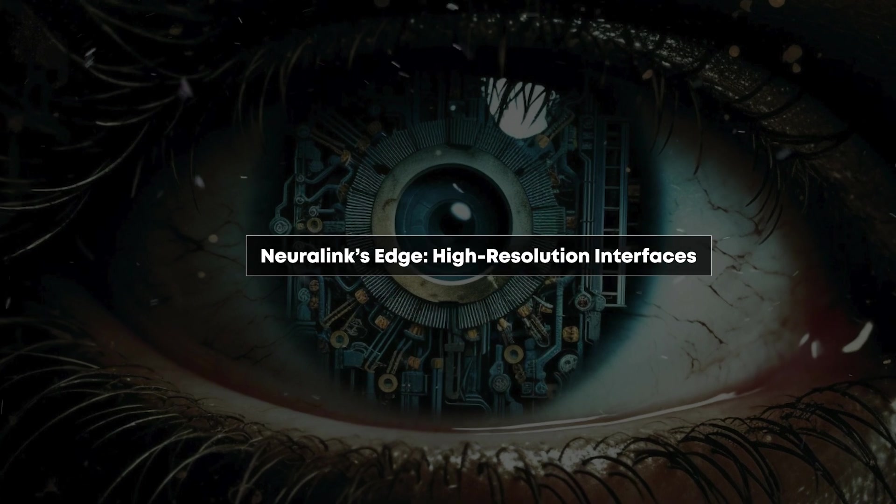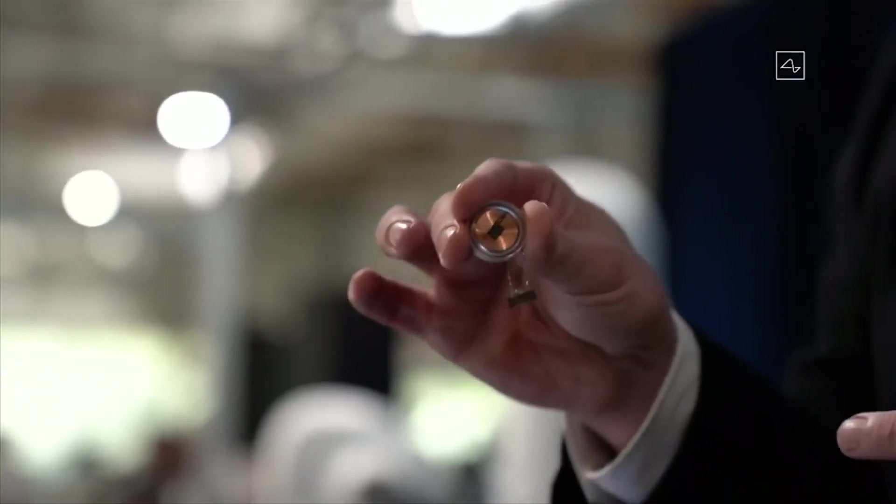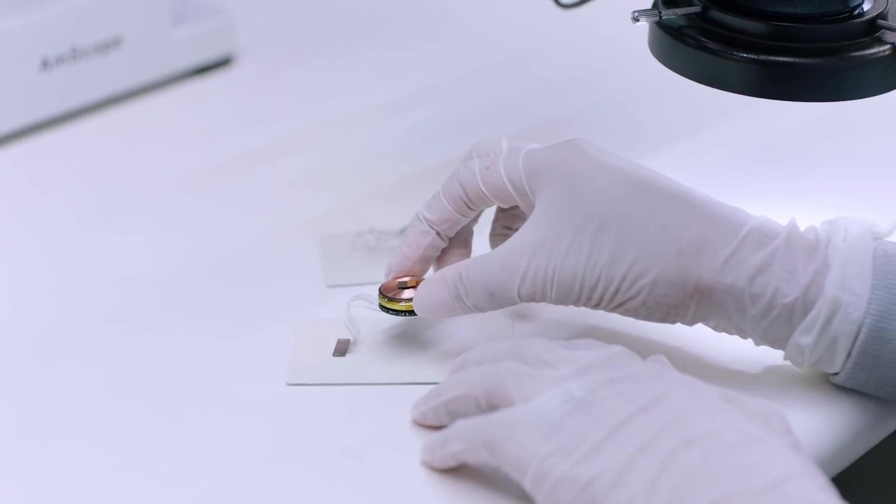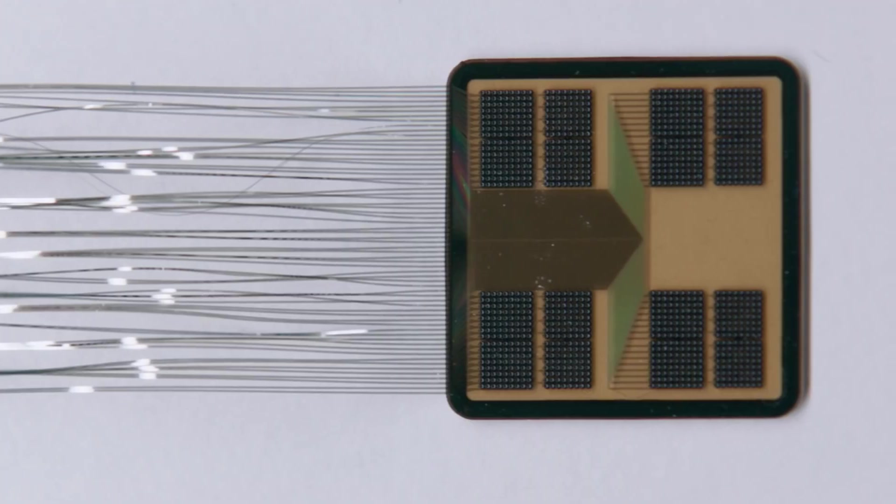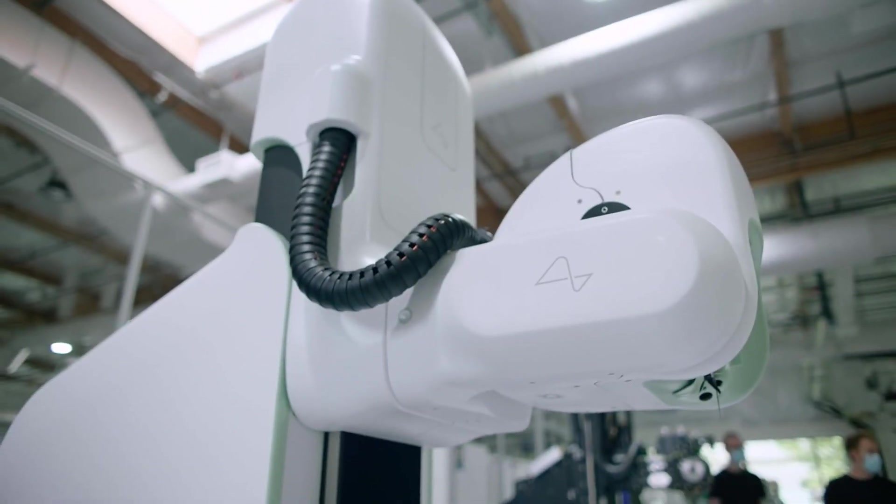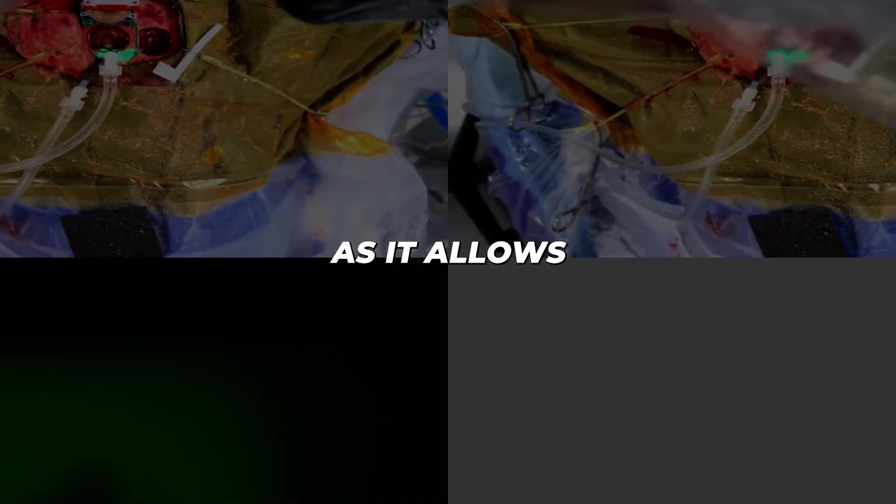While the fundamental concept of brain-computer interfaces for visual restoration isn't entirely novel, Neuralink brings several groundbreaking advantages to the field. Precision: Neuralink's R1 robot represents a significant leap in electrode placement technology. This robotic system can insert flexible electrode threads with unprecedented accuracy and consistency. This precision is crucial for creating a more detailed and coherent visual perception, as it allows for targeted stimulation of specific neural populations within the visual cortex.